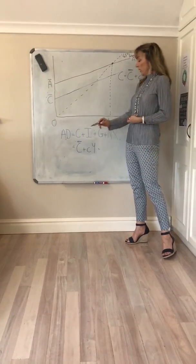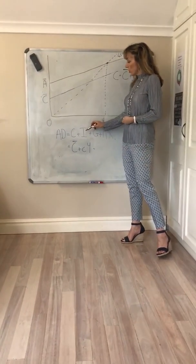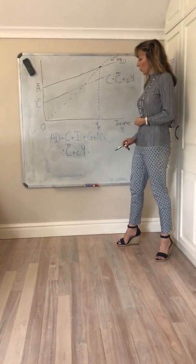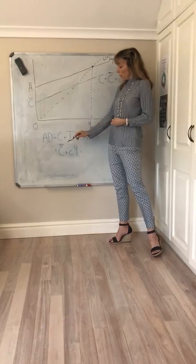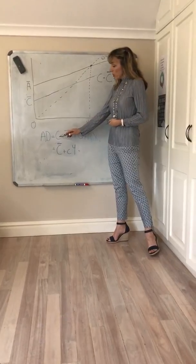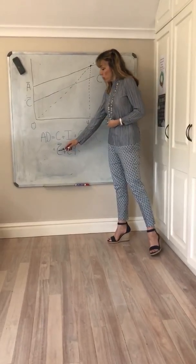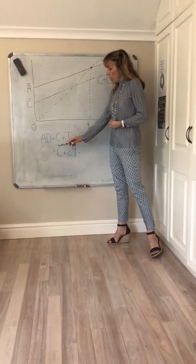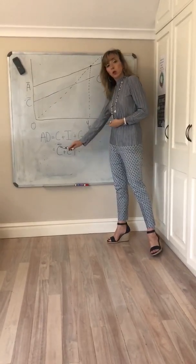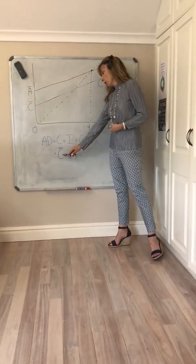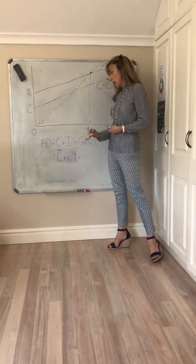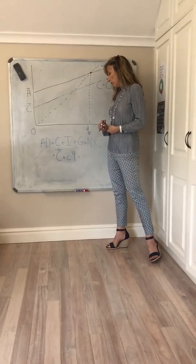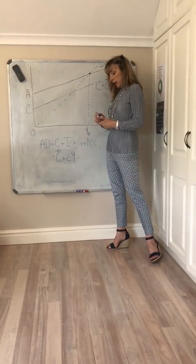We're now going to look at the next component of aggregate demand, which is investment spending. So we've decomposed consumption into its two parts: the autonomous component and the induced component. We're now going to add investment.